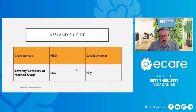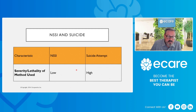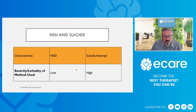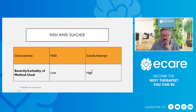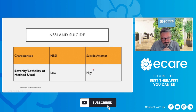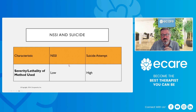Regarding severity and lethality of methods used: with non-suicidal self-injury, that tends to be lower. There are exceptions where people will use higher severity, higher lethality methods when self-harming, but in general it tends to be a lower level of severity and lower potential lethality. With a suicide attempt, the person is typically using a higher severity and more lethal method.